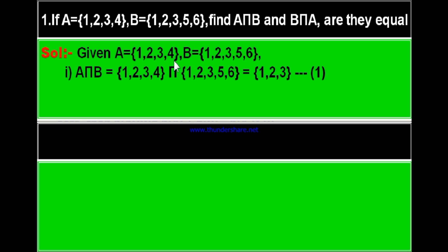Here you can find 1 in both sets, so write 1. 2 is in both sets, so write 2. 3 is common in both, so write 3. But 4 is present in the first set and not in the second set, so do not write 4. And 5 and 6 are not in the first set, so you cannot write them either. Therefore A intersection B equals {1, 2, 3}.